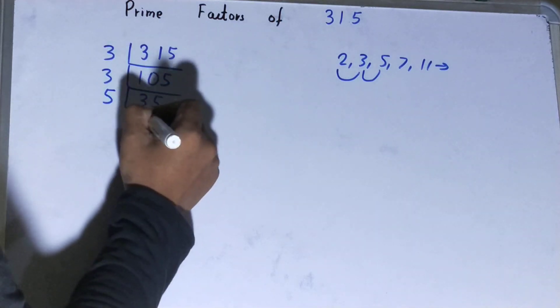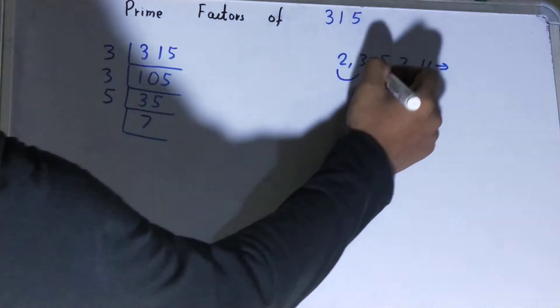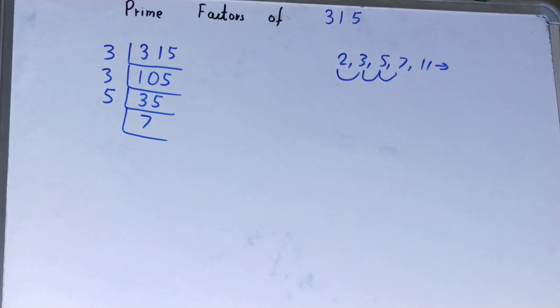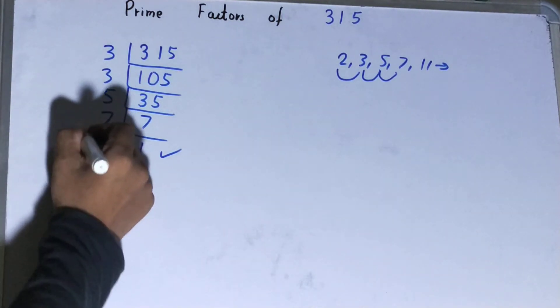Is this 7 further divisible by 5? No. So we'll go to the next lowest prime number, that is 7. And 7 is obviously divisible by 7, so divide it and you'll be left with 1. Once you're left with 1, the work is done. Whatever you have on the left-hand side will be the set of prime factors for the number 315.